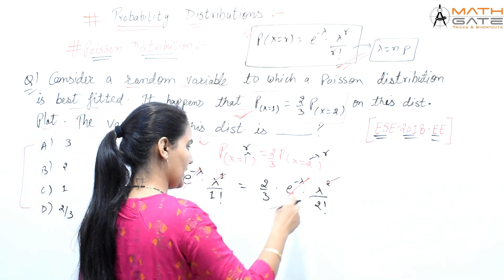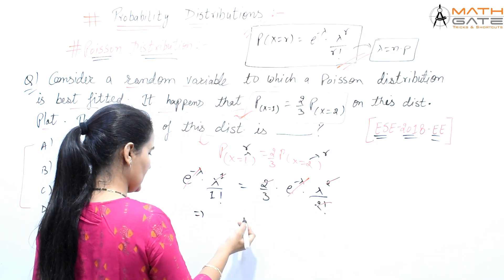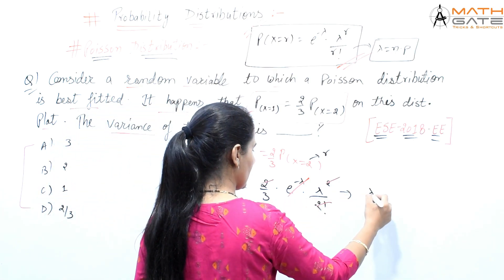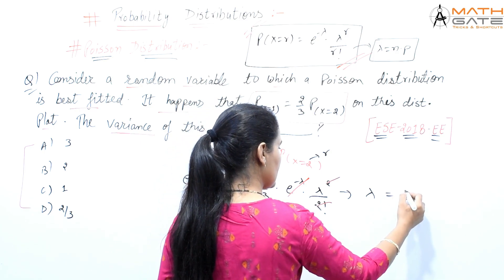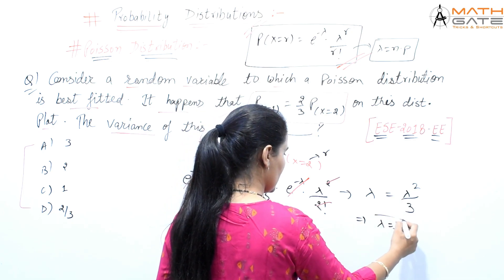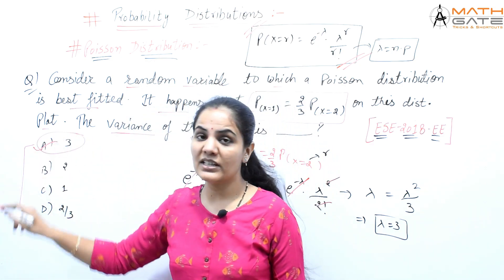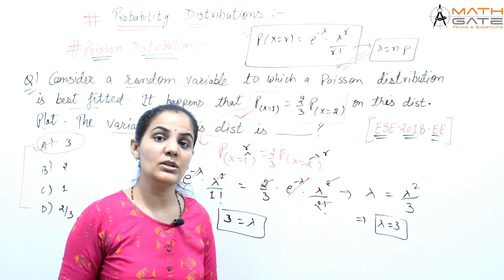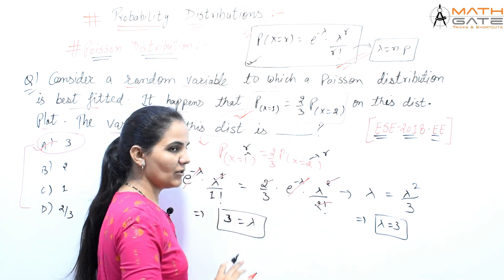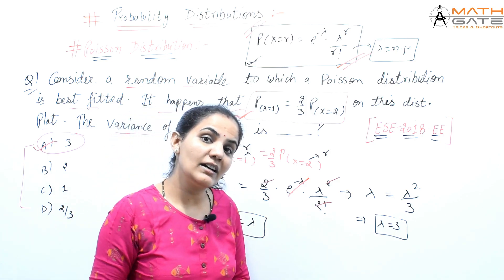After cancellation: one lambda cancels on the left, and the 2 in factorial 2 cancels on the right. We are left with 1 equals lambda squared divided by 3, or equivalently lambda equals lambda squared by 3. Cancelling one lambda from both sides gives lambda equals 3. This is the right answer, which appears as option number A.